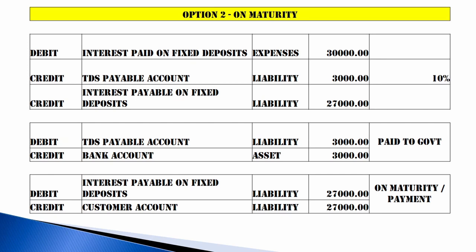The 27,000 will be given to the customer on maturity only. On maturity, while paying to the customer, I'll debit the payable account and credit the customer account. In the previous scenario, expenses are booked and TDS is sent directly to the government with the remaining amount going to the customer. Here, we keep amounts in payable accounts as liabilities — TDS payable and interest payable — because actual payment is not happening yet, but interest is calculated and TDS must be deducted. This is TDS provisioning, collected on the maturity or customer payment date.